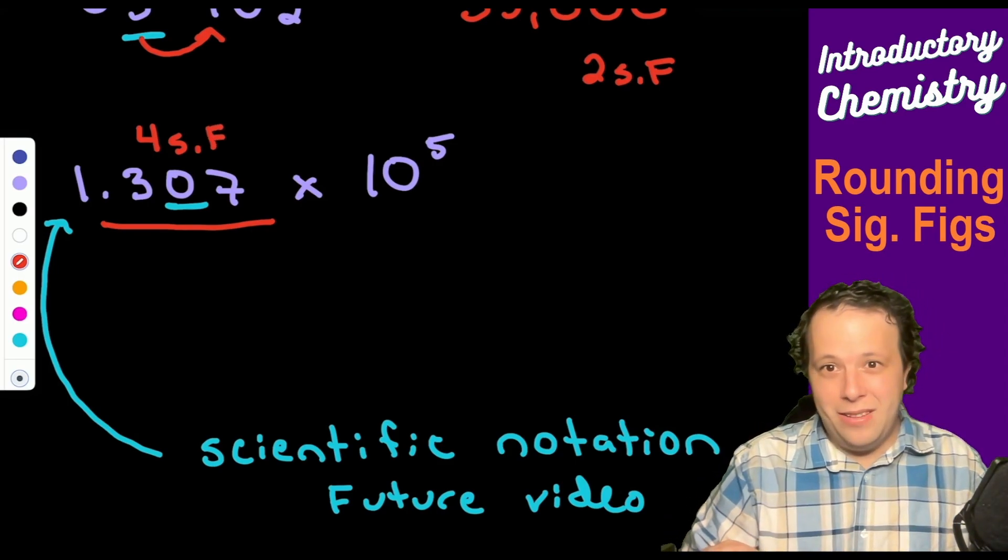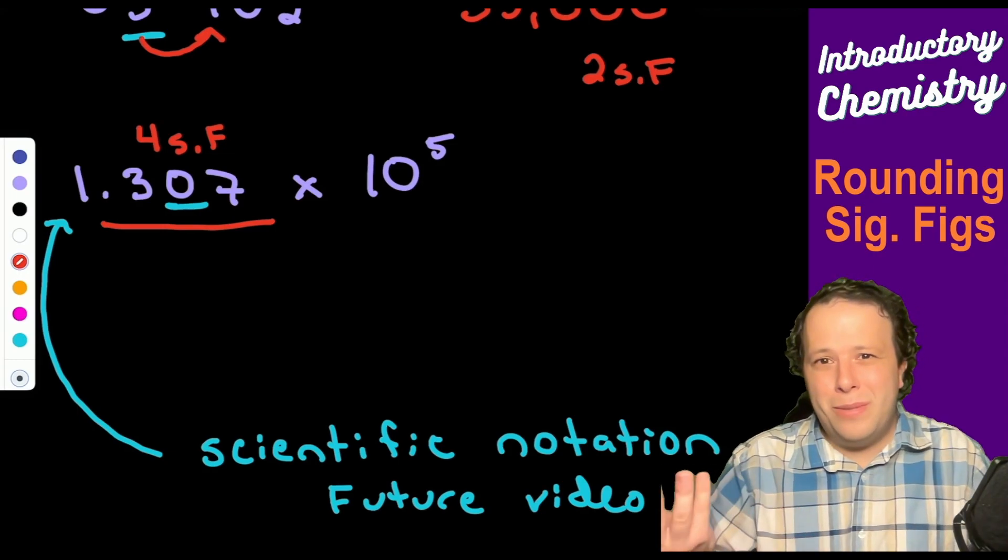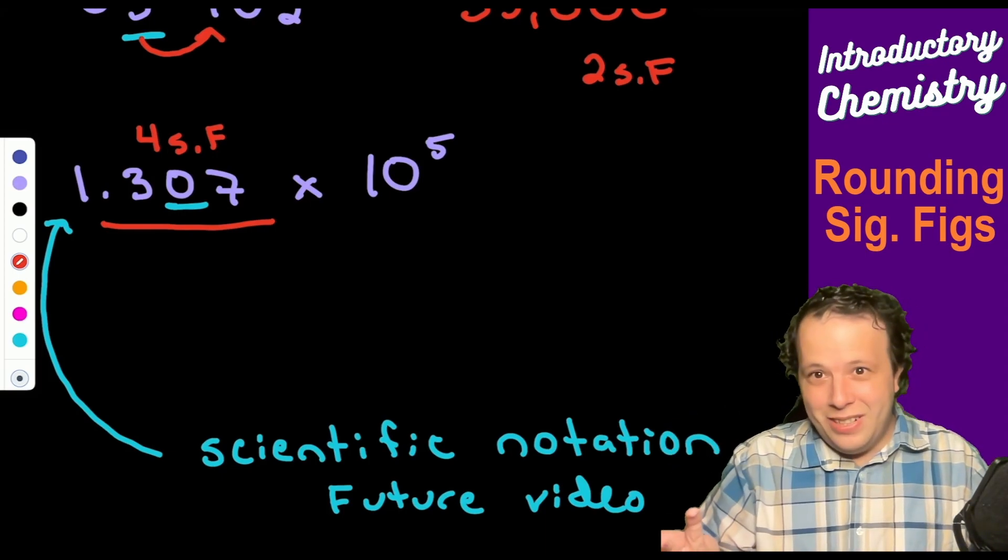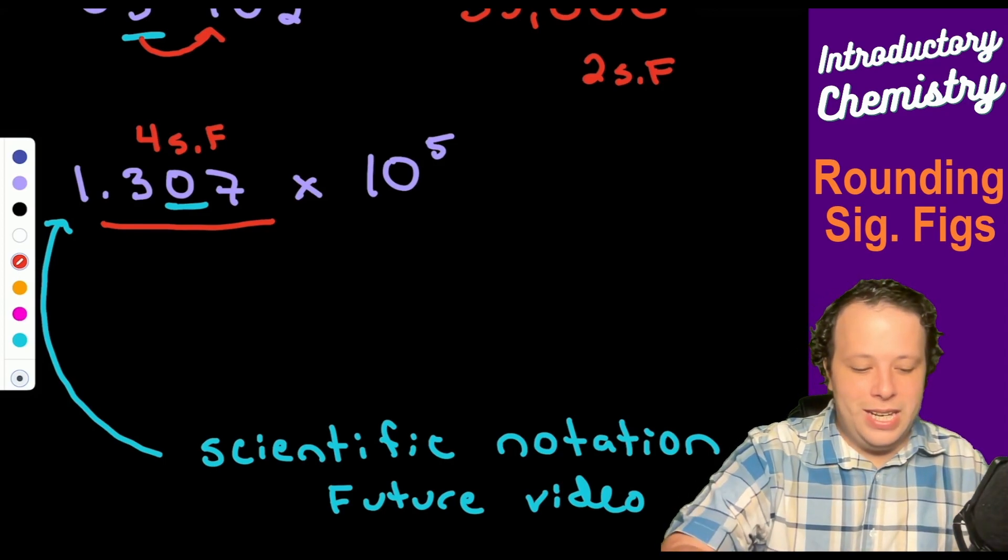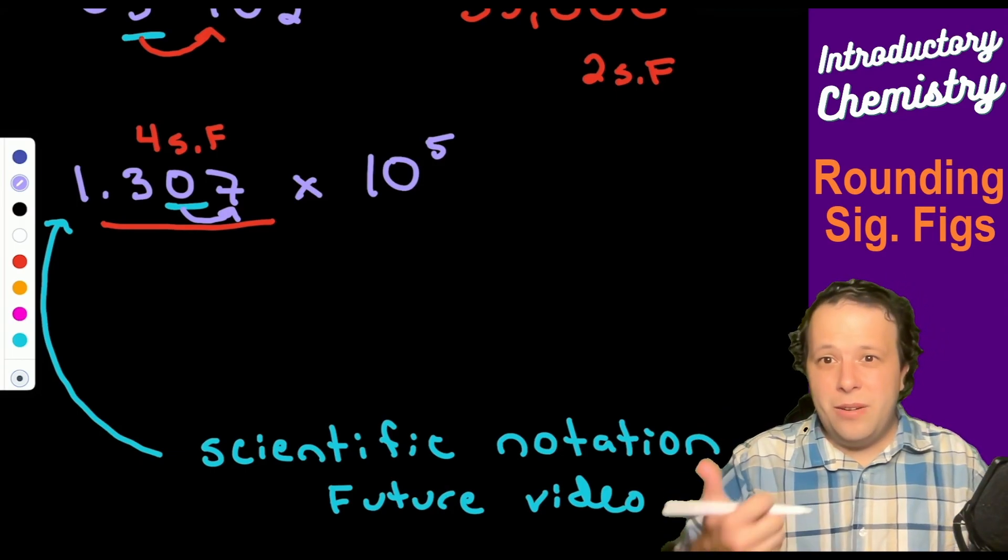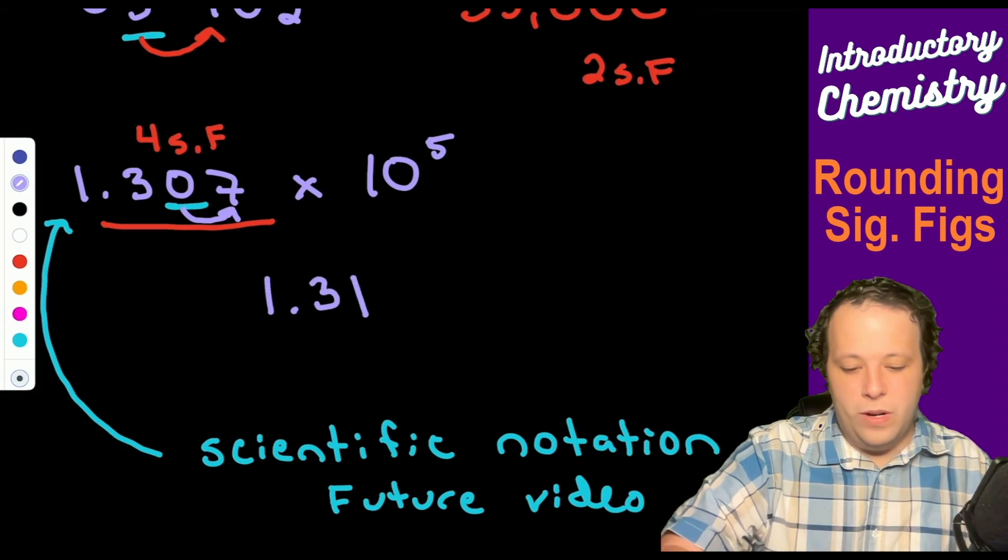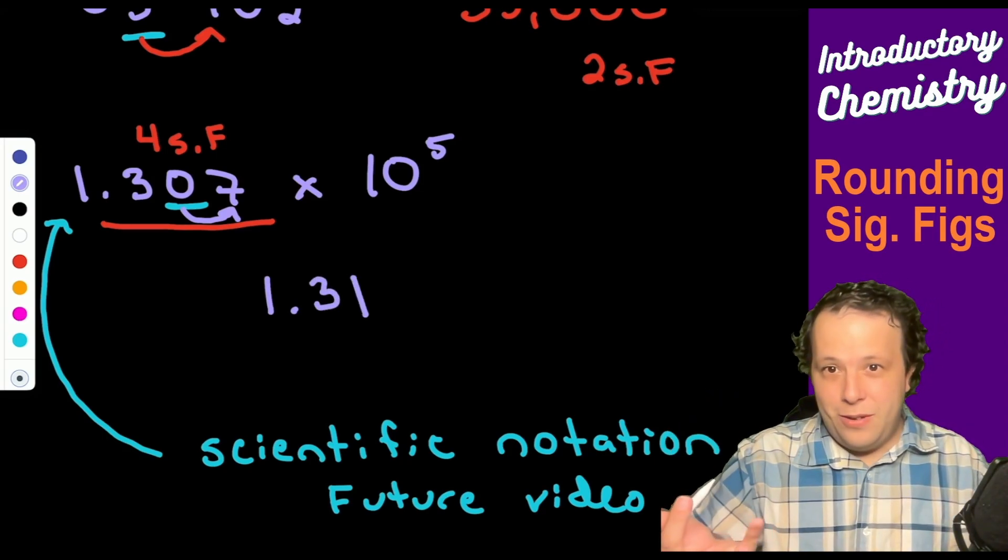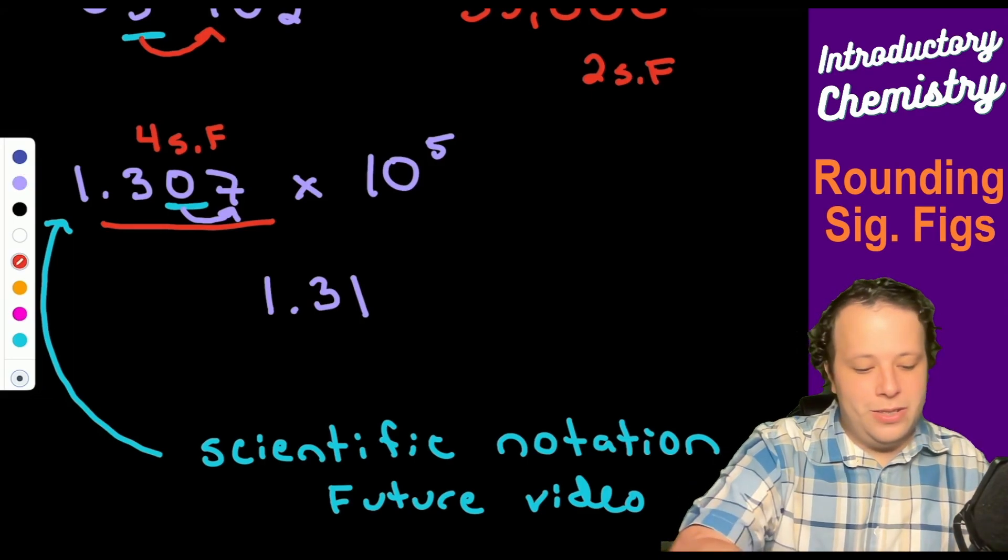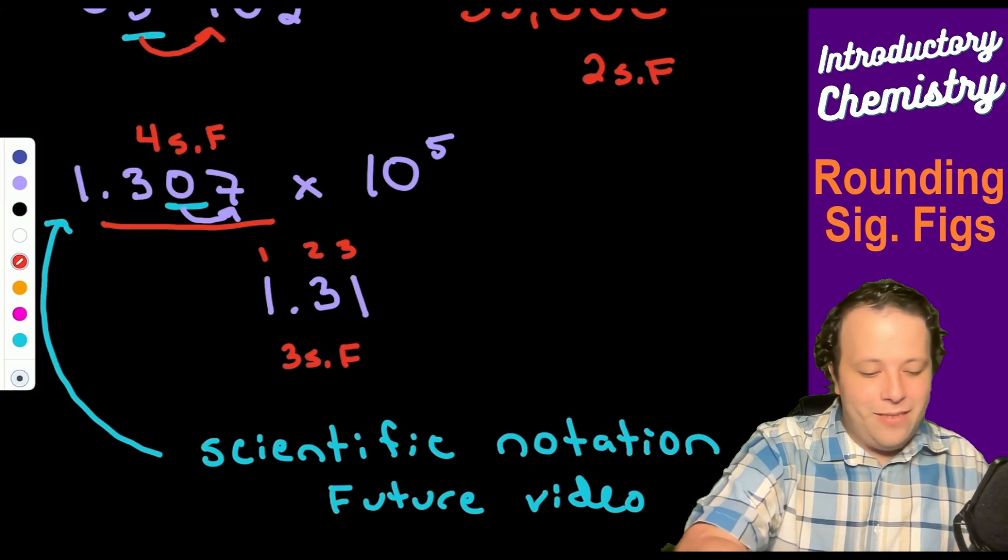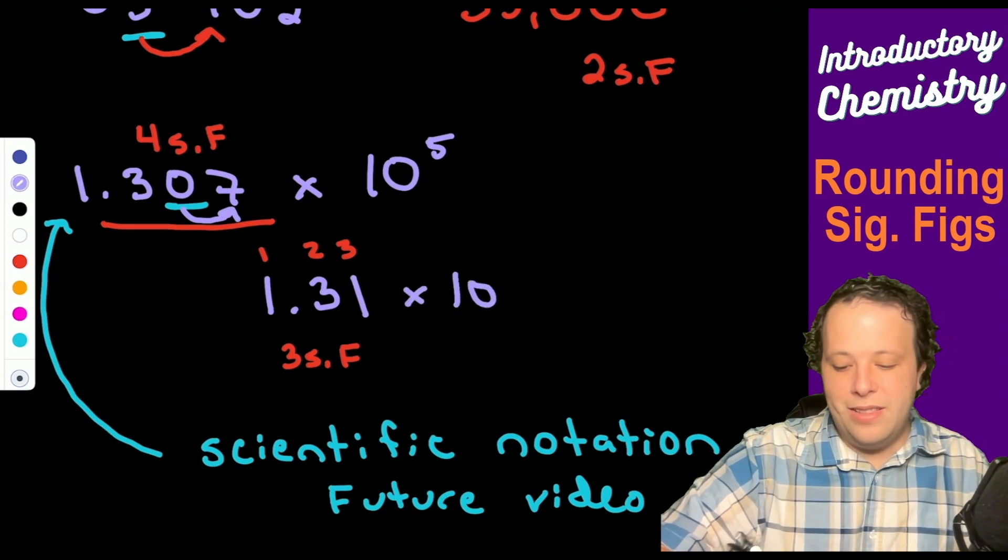We don't count the times 10 to the fifth - that's just telling you how much you're moving a decimal. We want to round it, we can leave it in this form which is awesome. You take that zero, you look over at the seven, and we see that it's going to round up. So in this case we'll have 1.31 times 10 to the fifth. This tells you we have three sig figs, and we can't forget to bring down the times 10 to the fifth.